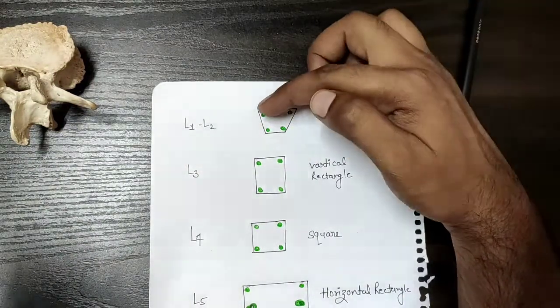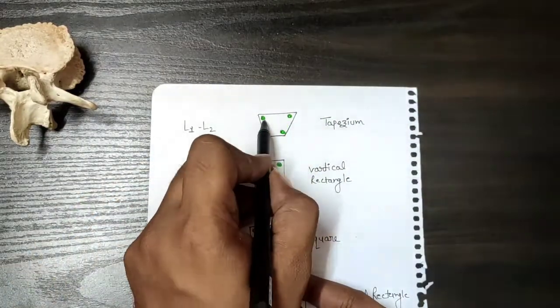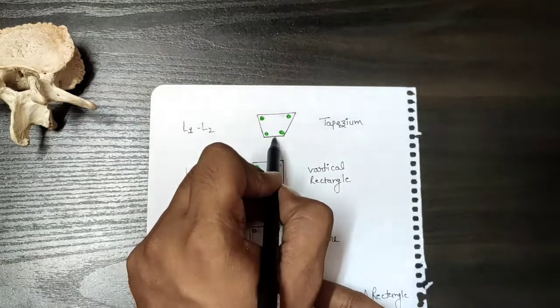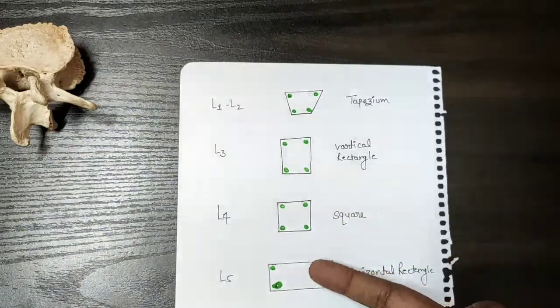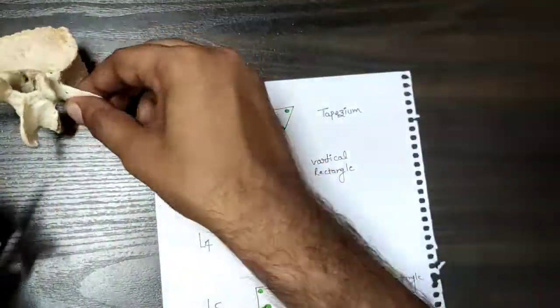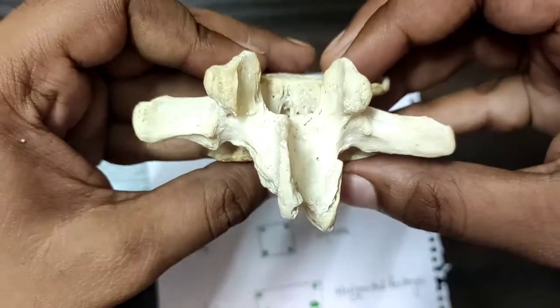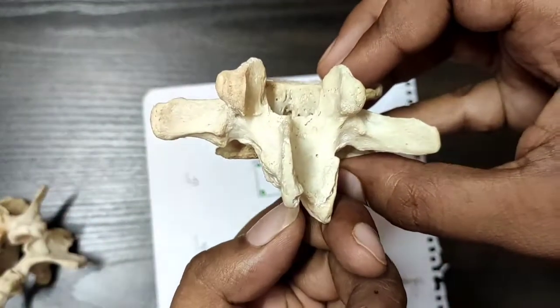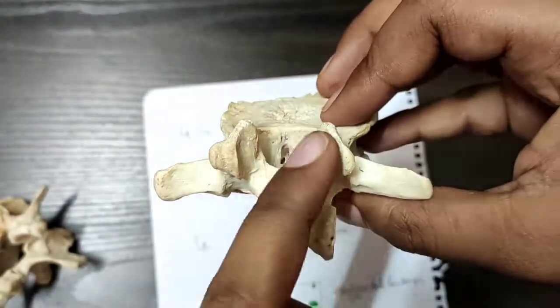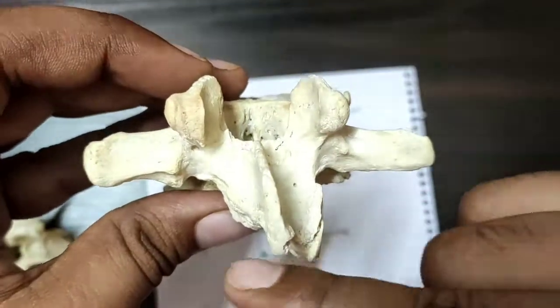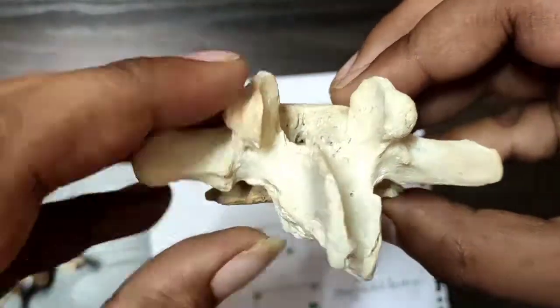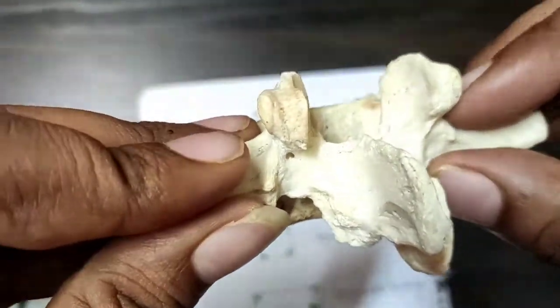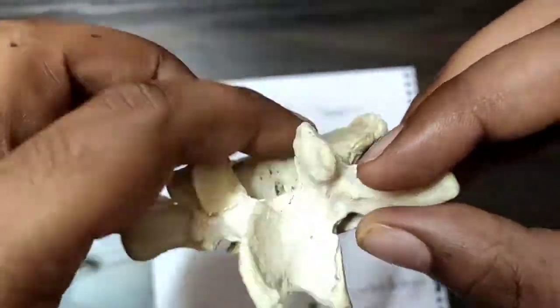For L1 and L2: the shape is a trapezium. The distance of the superior articular facet is larger, but the distance of the inferior articular facet is less. So the superior articular facet distance is more and the inferior articular facet distance is less, giving a trapezium shape. This trapezium shape identifies L1 and L2 vertebrae.